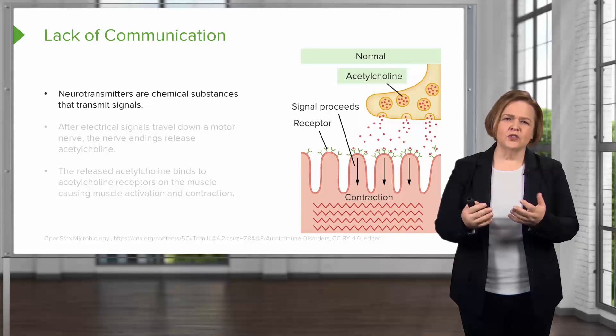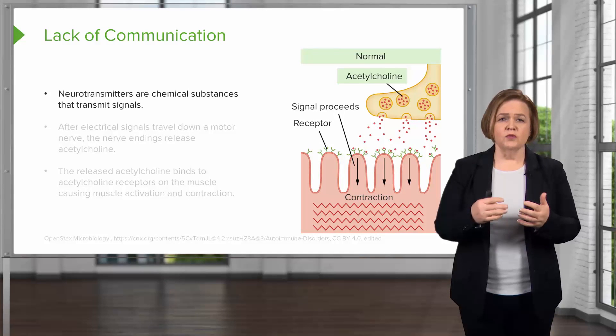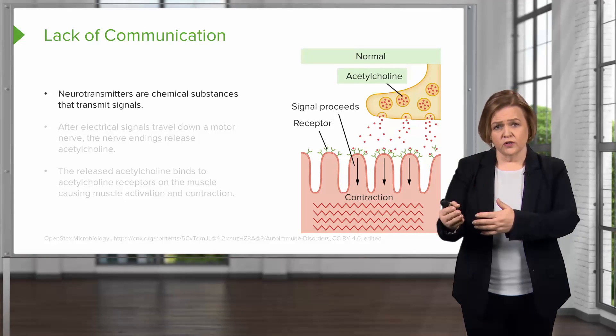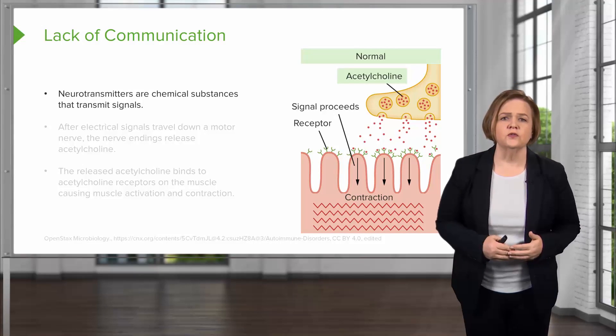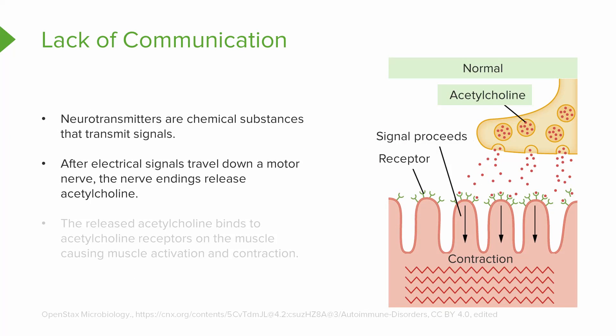Neurotransmitters are chemicals that communicate with the neurons. That's how they send a message from the nerves to the muscle to tell it what to do. Normally, when these electrical signals or impulses travel down a motor nerve, the nerve endings release a neurotransmitter called acetylcholine. Looking at our picture of a normal nerve and muscle connection, those electrical signals travel down and cause the release of acetylcholine into the neuromuscular junction.